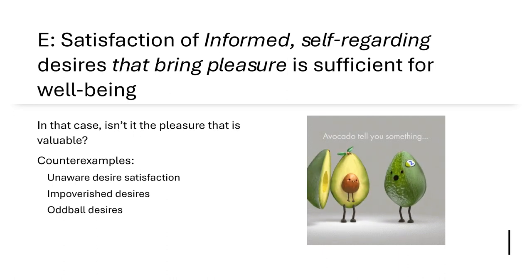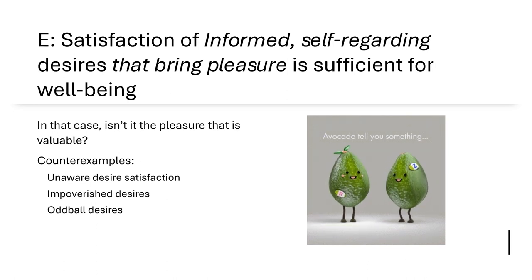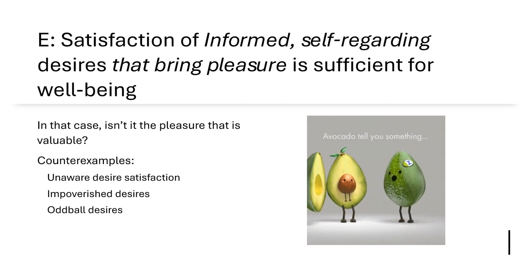Some counterexamples to desire satisfaction views include unaware desire satisfaction. Can something satisfy a desire without you being aware that it did? Say it would give me great pleasure if the number of stars in the universe were a prime number. If I just desired that the number of stars be prime, I would never actually get the pleasure. But you want to say: if the number of stars really is prime, then that desire has been satisfied, and since satisfying that desire would bring pleasure if you knew, then that makes your life go better for you. And that's weird.